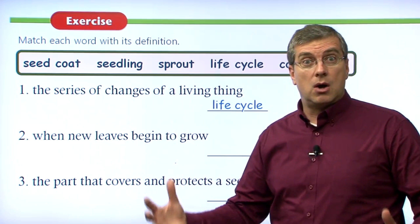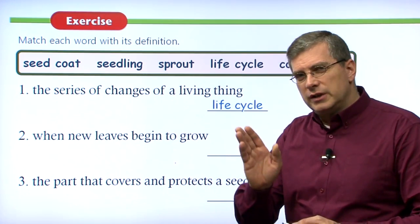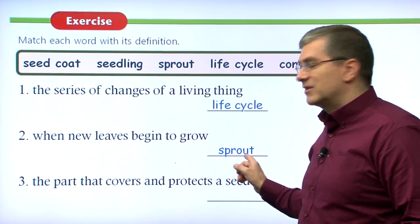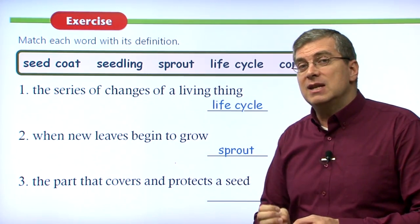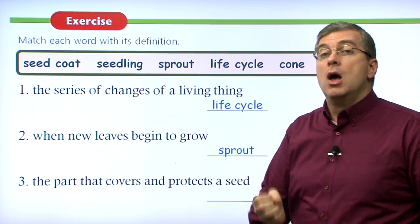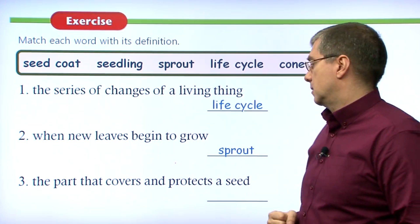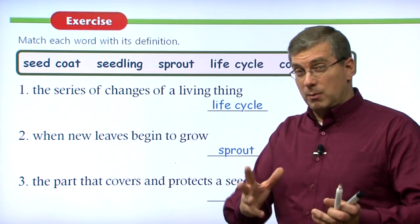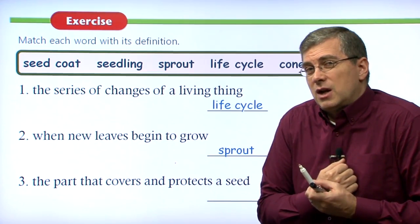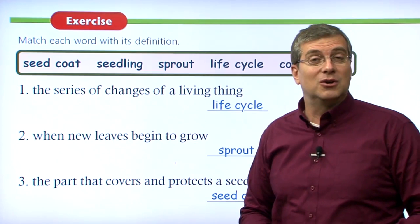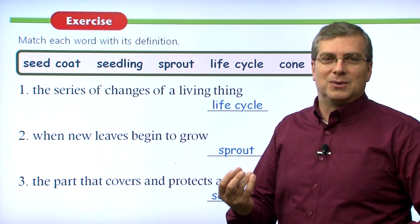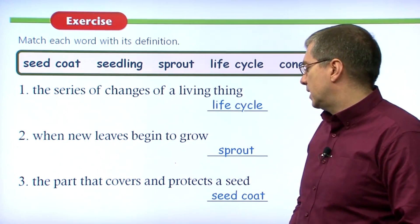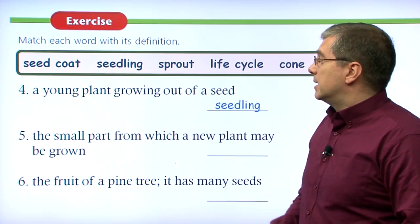Number two — when new leaves begin to grow. At the very beginning, when the plant is just coming up out of the ground, when new leaves begin to grow, it is sprouting. Sprout is a verb — it's the action, the process of the plant just beginning to grow. Number three — the part that covers and protects a seed. Just like you put on a coat to protect yourself from the cold, the seed has a coat too. That is the seed coat.